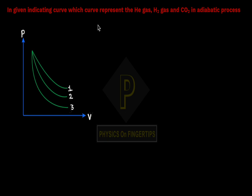So, we know that PV raised to gamma equals to constant. If the value of gamma is different for different gases, then we can identify them.